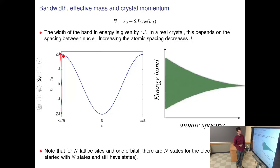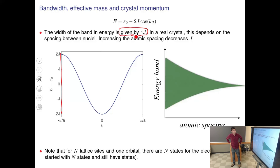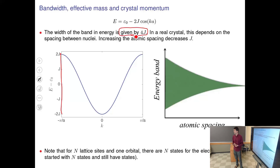The size of the band is 4j in the tight binding model — it only depends on j. This gives extra meaning to j: it controls the bandwidth, the energy interval in which electrons are allowed to live. So you could measure the bandwidth experimentally and directly extract the parameter j for your tight binding calculation.